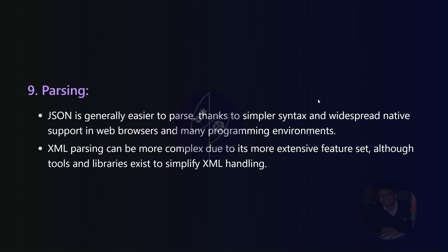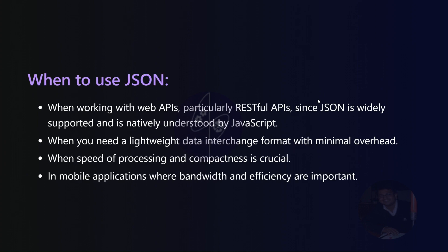When to use JSON. JSON is ideal when working with web APIs, particularly RESTful APIs, as it is widely supported and natively understood by JavaScript. It is suitable for scenarios demanding lightweight data interchange with minimal overhead, prioritizing speed and compactness, and in mobile applications where bandwidth and efficiency are crucial.